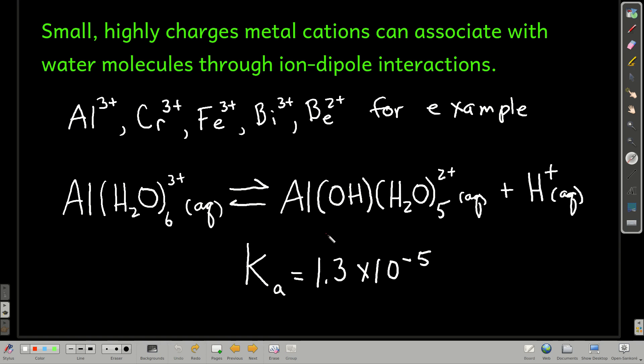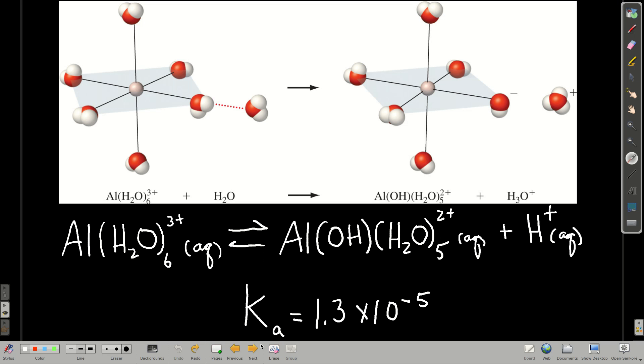Now, cations. How can cations affect the pH of a solution? Well, some, the ones that are small and highly charged, can associate with water molecules and actually help another water molecule to pull off a proton, meaning that they're acidic. Now, to do that, the metal ion has to be pretty small and highly charged. Highly charged means most of the time plus 3, but something really small like beryllium plus 2 will do it, too. So, for example, with aluminum in water, this equation describes what happens. Water molecules associate with the aluminum ion, and another water molecule comes along and pulls off a proton from one of these guys. I'm going to show you that in a minute. But the Ka for this is 1.3 times 10 to the minus 5th. It's not that small. It's appreciable.